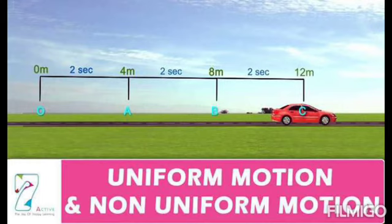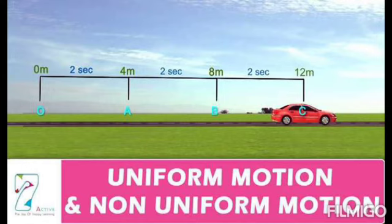Next is uniform and non-uniform motion. Uniform motion is when a particle or body moves along a straight line and covers equal distance in equal intervals of time. For example, if a body covers 4 meters every 2 seconds consistently — 4 meters in 2 seconds, then 4 meters in the next 2 seconds, and so on — we call this uniform motion.